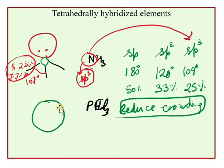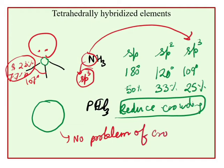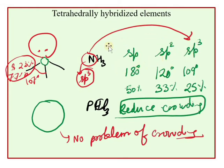In the case of phosphorus, the size is large, so there is no problem of crowding. Since the bond angle does not need to be large, a smaller angle works. Where there is more p character, the bond angle is smaller. So more p character means a smaller bond angle.